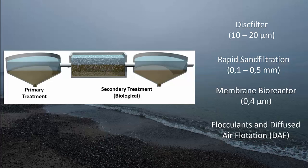As you can see from the picture here, the size of the disc filter, rapid sand filtration, and membrane bioreactor are quite narrow, especially the disc filter and membrane bioreactor. These are even smaller than the smallest particles found in the water after the secondary treatment.